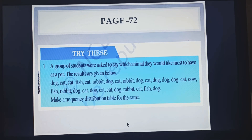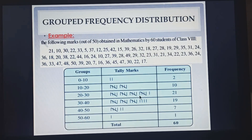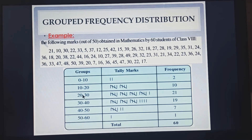Now let us see what is group frequency distribution. In this example, the marks obtained in maths by 60 students has been given. You can see all these numbers — there are varieties of numbers given here. And if we represent this data in the form of a frequency distribution table, then we will get too many rows.